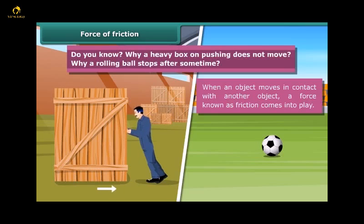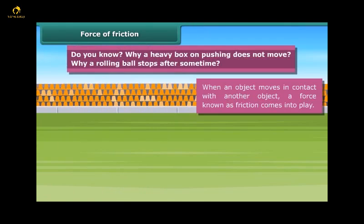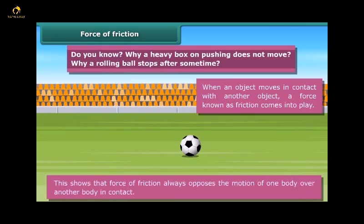Note that the force of friction always acts on all objects and its direction is always opposite to the direction of motion. The moving object in the animation gradually slows down and ultimately stops due to the force of friction. This shows that force of friction always opposes the motion of one body over another body in contact.